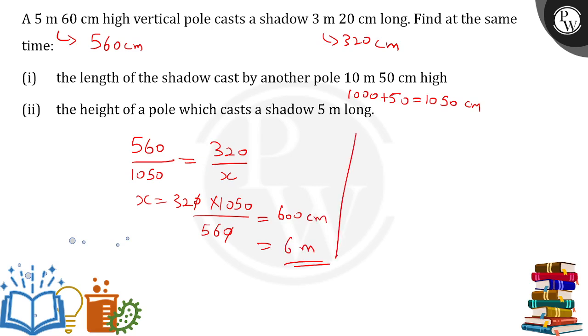For the second part, if I have to consider - for the second part, height of the pole which casts a shadow, this time the shadow casted has been given to us. So the same relation, if I assume, 560. 560 was what?